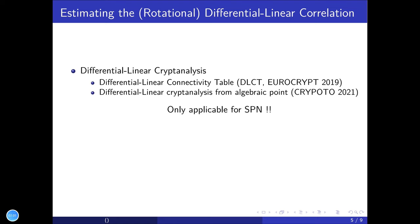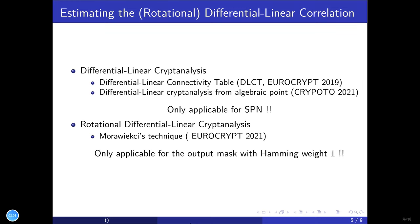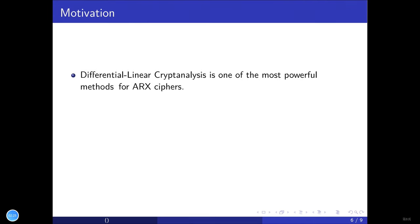And for rotational differential-linear cryptanalysis, a more vast case technique is adopted to compute the correlation of rotational differential-linear distinguishers. However, the main problem is that it is only applicable for the output mask with Hamming weight 1.